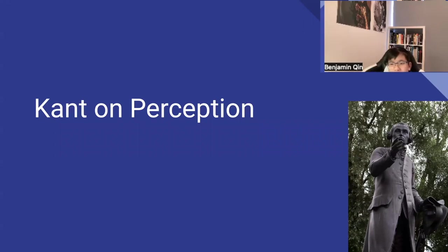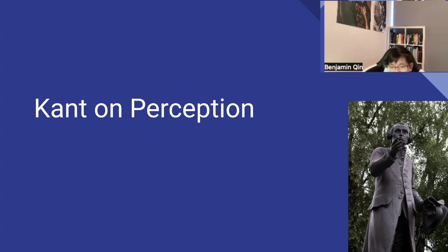Today I'll be lecturing about Kant on perception. Since this is quite a broad topic that Kant covered in his magnum opus, The Critique of Pure Reason, this lecture will only be a summary of the key ideas. In the bottom right corner of this slide you can see a statue of Kant in his hometown of Königsberg, which has since been renamed Kaliningrad.